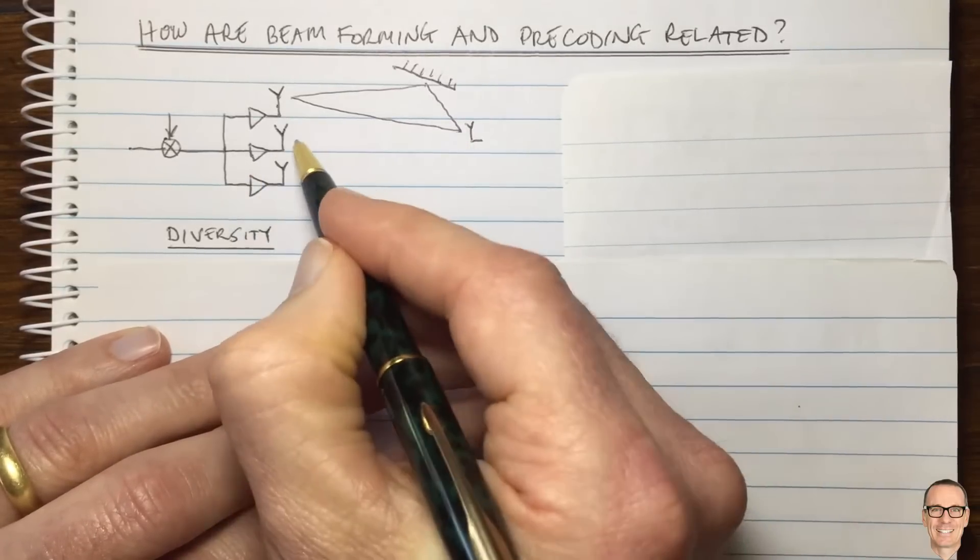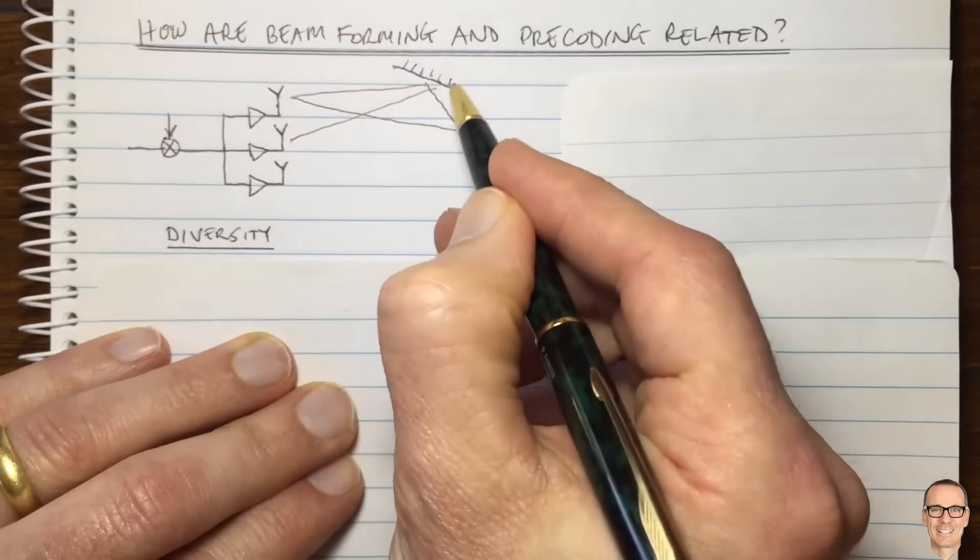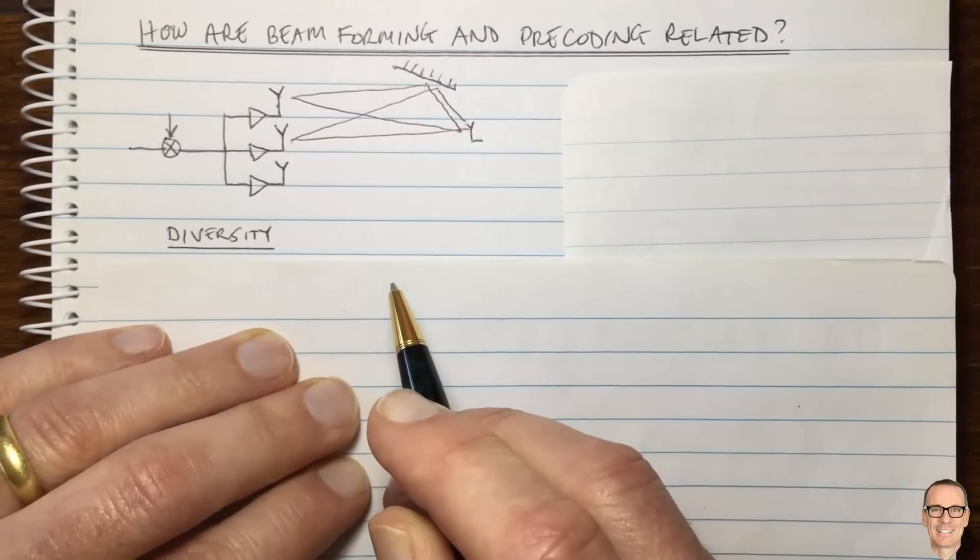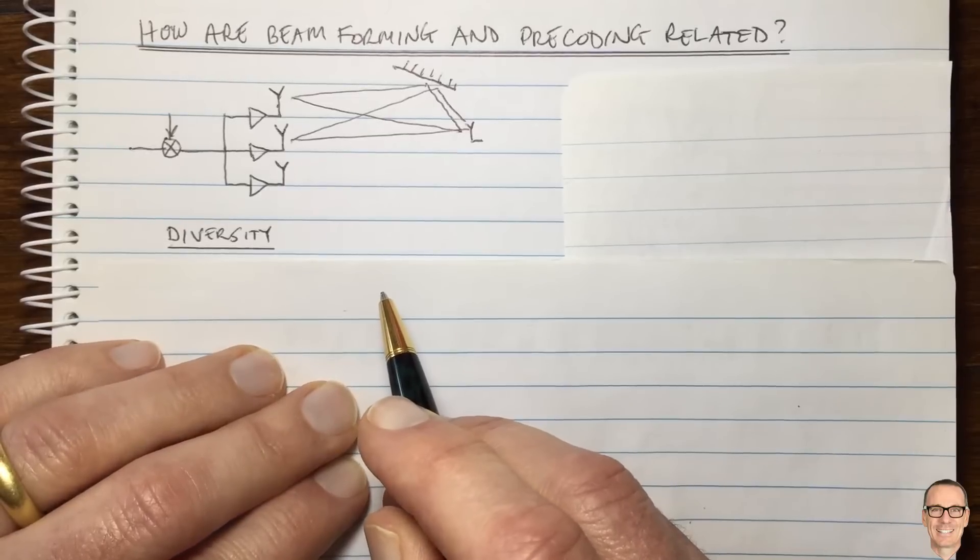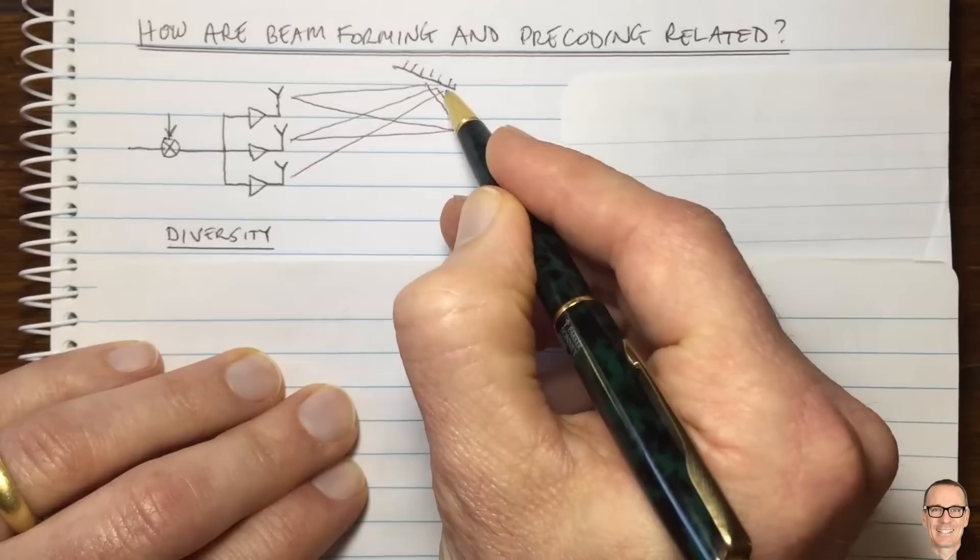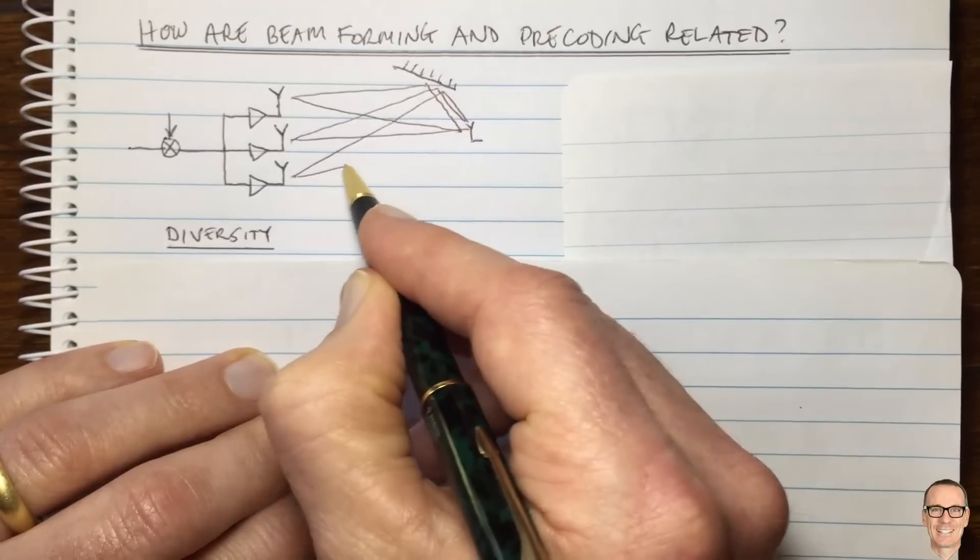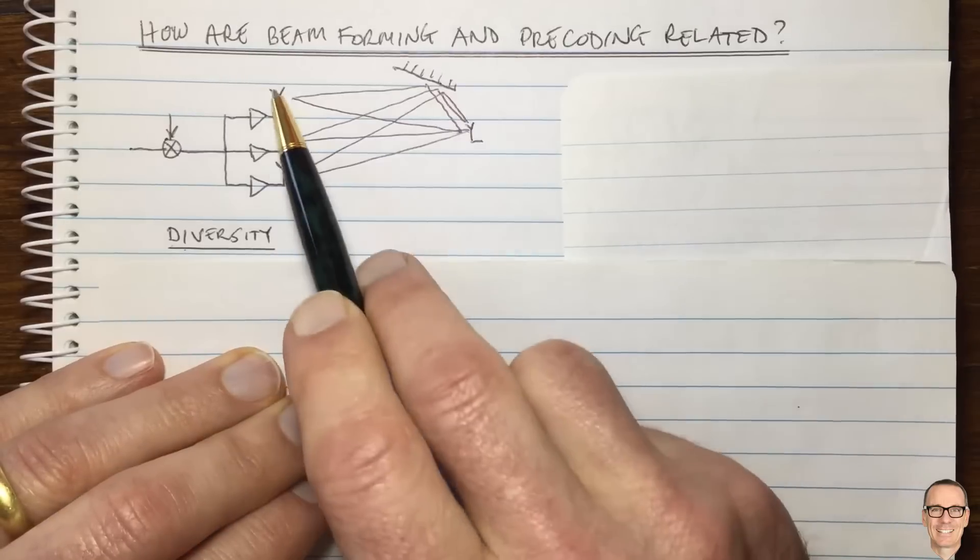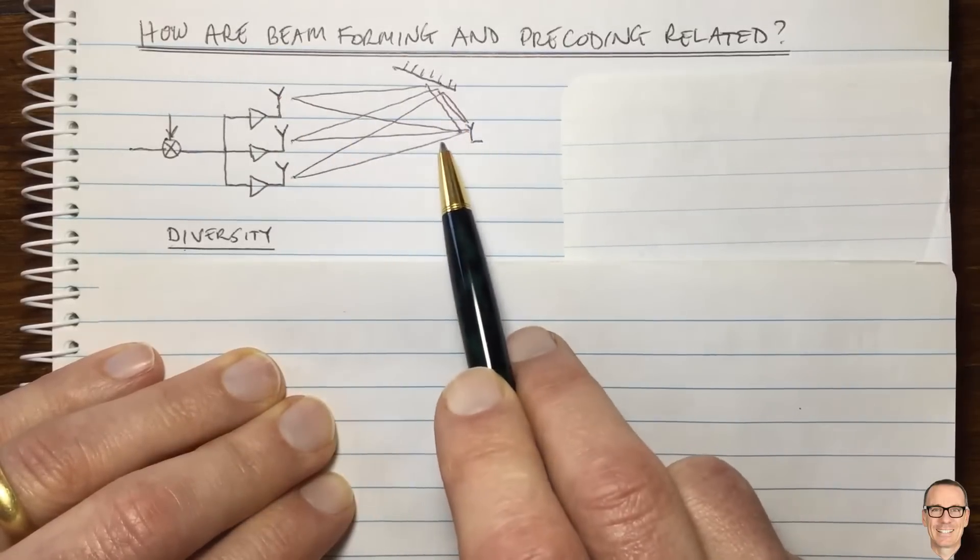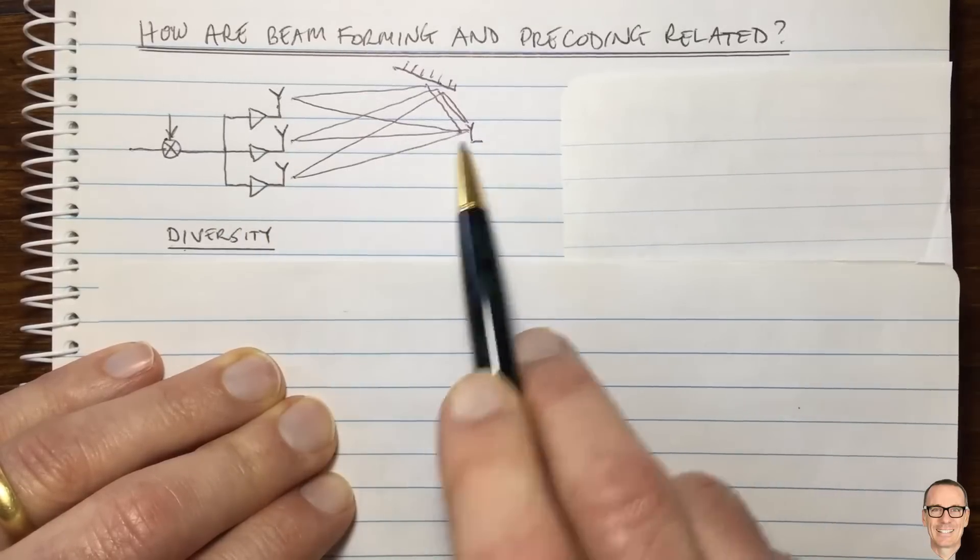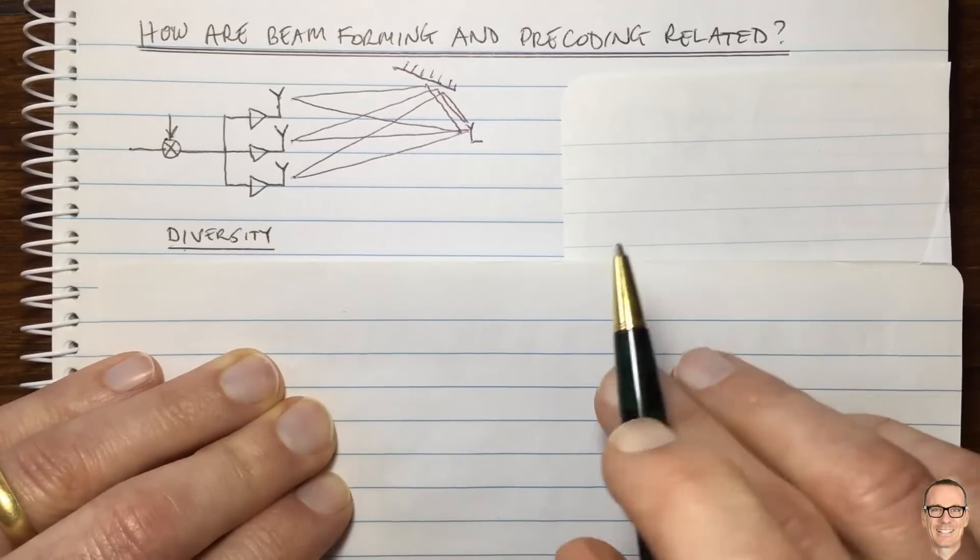So if you have another antenna, then the chance that the signals from that antenna would also cancel themselves out becomes less. And the more antennas you have, the less chance there is that all of them are going to have destructive interference. So this is what we call diversity. There's an advantage from having a diverse number of paths between the transmitter and the receiver. This is simple diversity.